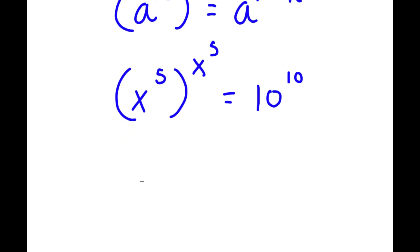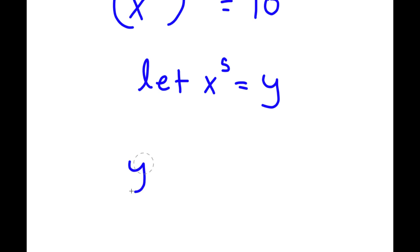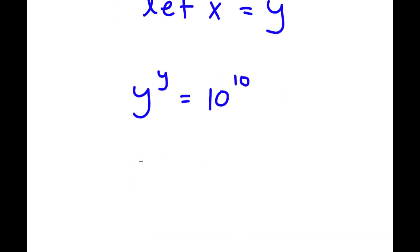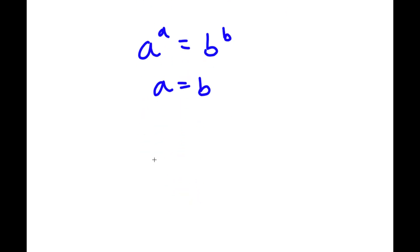Now I'm going to let x to the power of 5 equal the variable y. So now I have y to the power of y is equal to 10 to the power of 10. And if I have something in the form a to the power of a is equal to b to the power of b, this means that a is equal to b. So in this case, y is equal to 10.